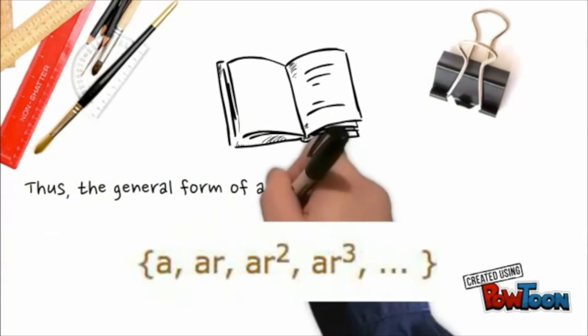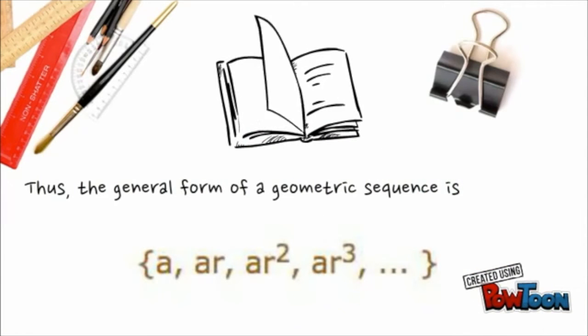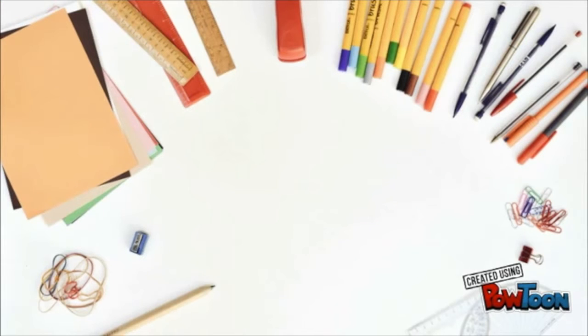The general form of a geometric sequence is written as a, a times r, a times r raised to 2, a times r raised to 3, and so on.